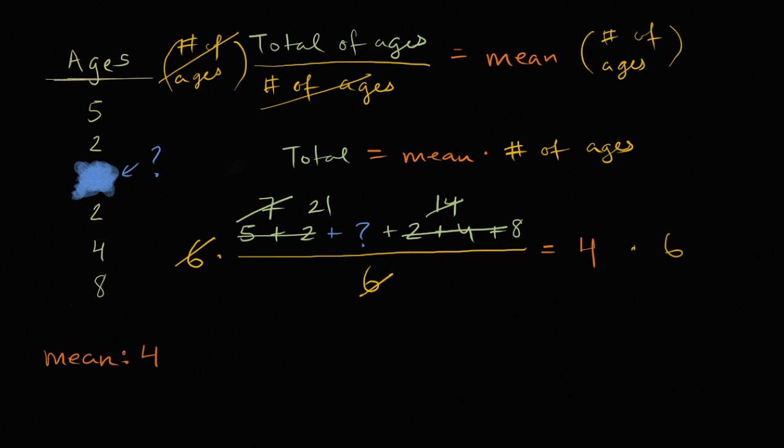So all we're left is, on the left-hand side, we're left with twenty-one plus question mark. All of these other green numbers, those are simple. Five plus two plus two plus four plus eight is twenty-one, and we still have the question mark.